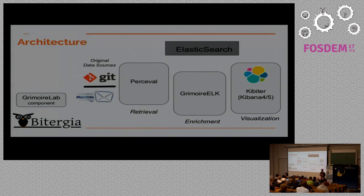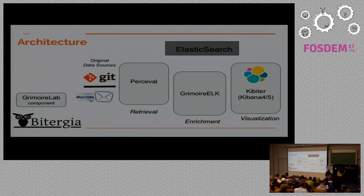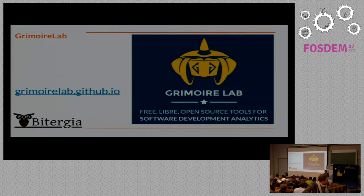That's what we call the raw index. We have raw indexes which have exactly the same information as the original data source, so you don't need to go back to the original source — you just query Elasticsearch, which is much easier. Then for producing added-value indexes, we use Grimoire Lab. Grimoire Lab goes to the raw indexes and enriches the information — for instance, calculating how long it took to close a ticket, or whether a pull request is still open. We produce new indexes called enriched indexes, designed for visualization with Kibana. You can also use Python scripts to access them.